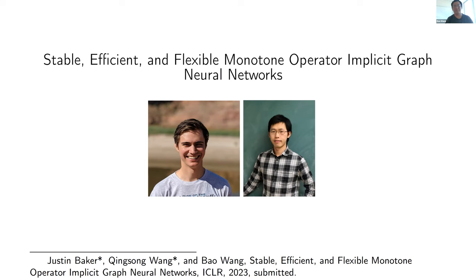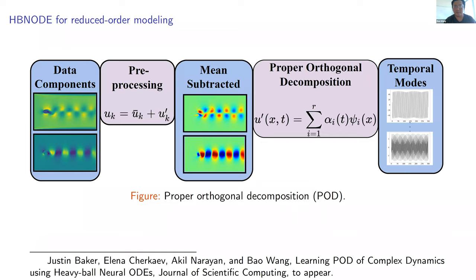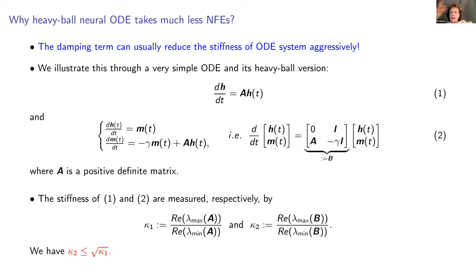Audience question: Are the function evaluations comparable, or could some be more expensive depending on the network? Dr. Wan: In our method, we still evaluate the neural network once per step — we just have an additional cheap momentum state. So the computational time per function evaluation is almost the same for neural ODE and heavy ball neural ODE.